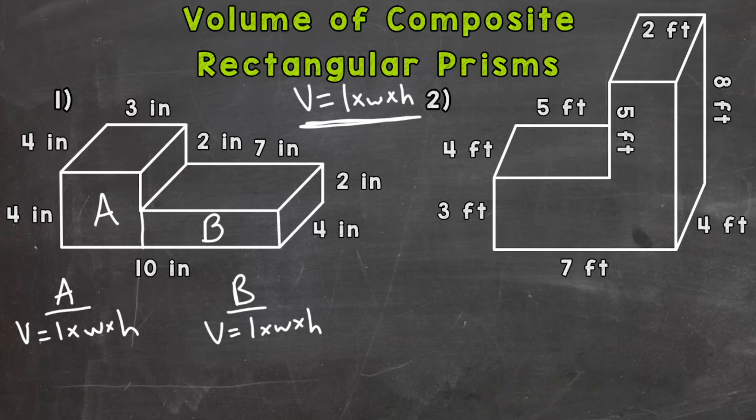So I'm going to put our A and B. And then let's write out our formula for each. And once we get to this part, it's about picking out the correct lengths, widths, and heights for A and B. So again, let's do A first. So we need the length. And I consider the length how far back that rectangular prism goes. So we're going to want to see how far back. And that's going to be four inches.